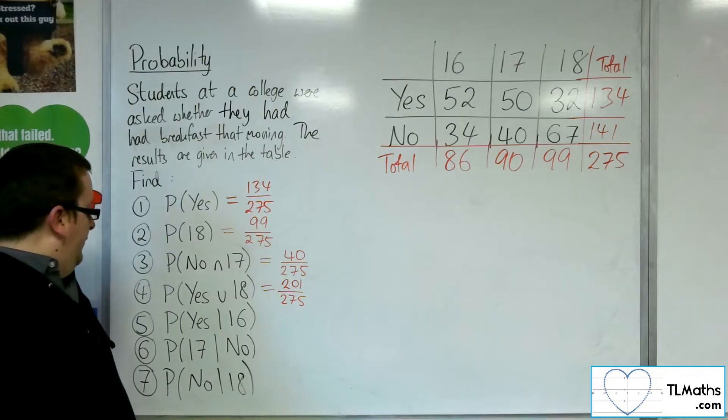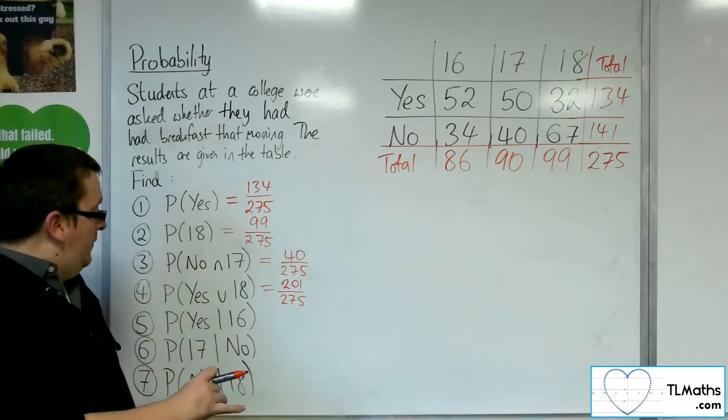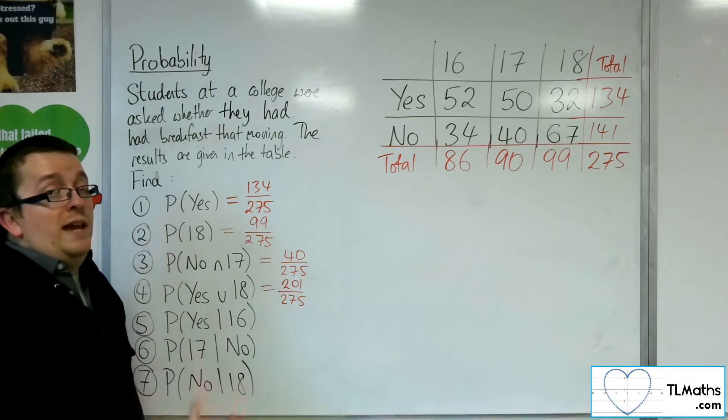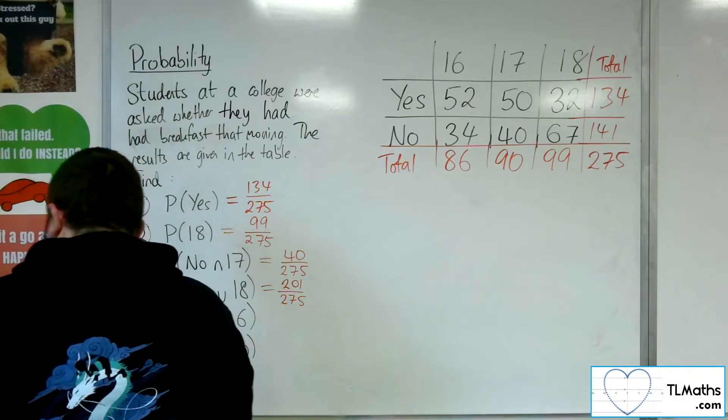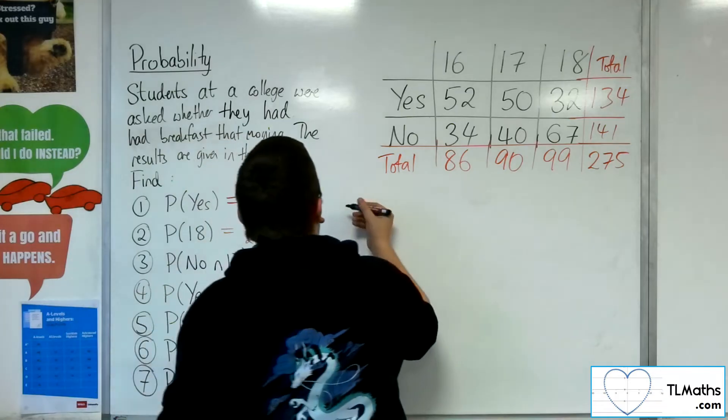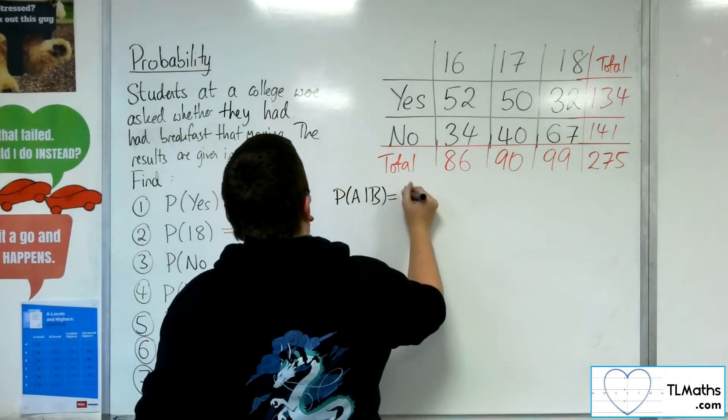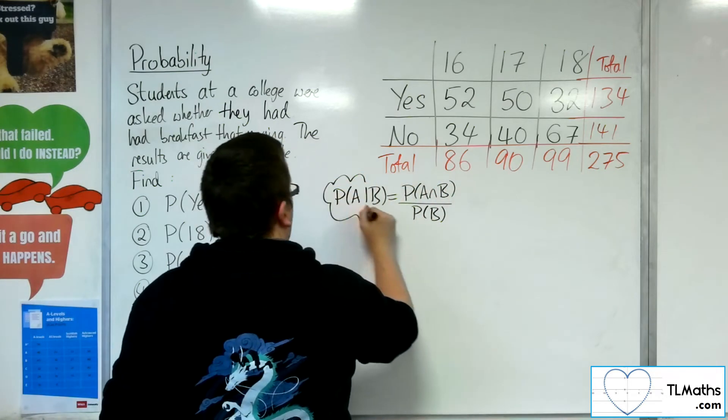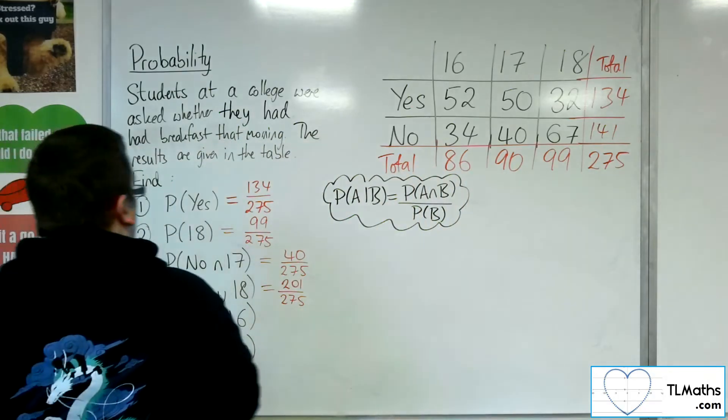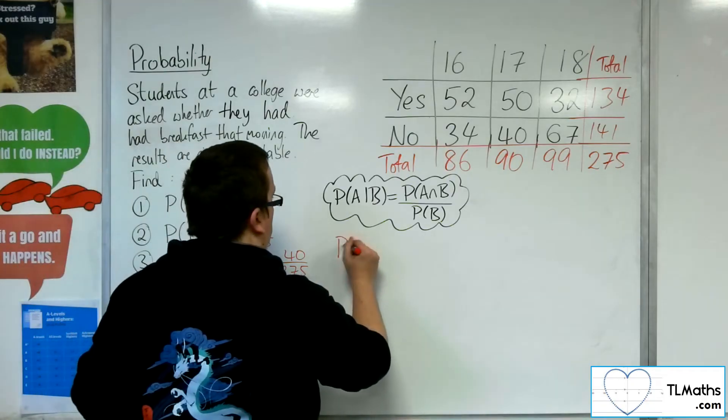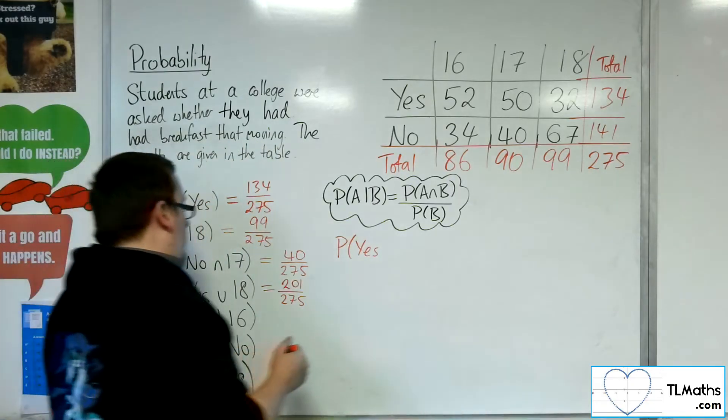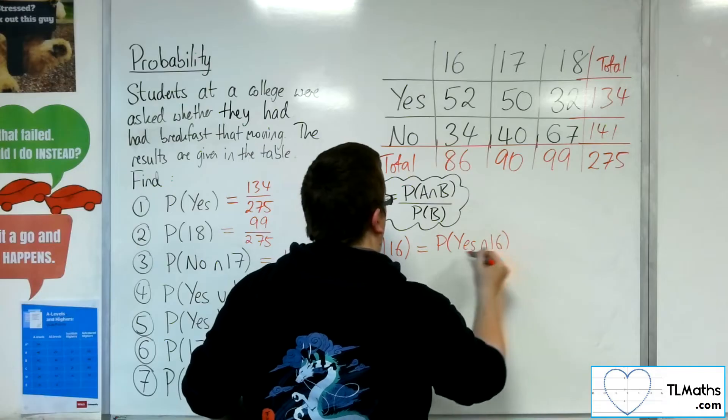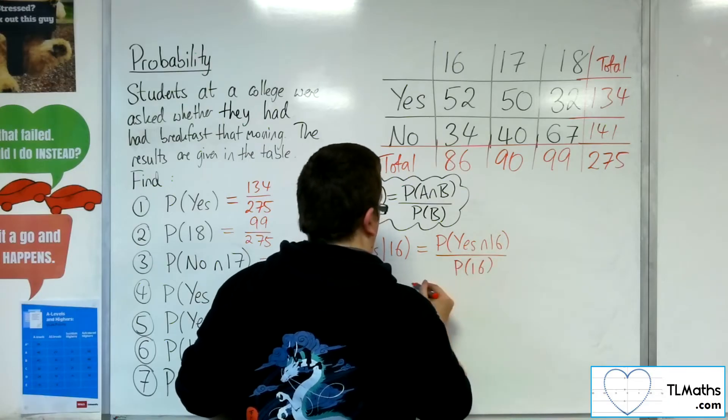Right, now we get to the conditional probabilities. So the probability of saying yes, they did have breakfast given that they were 16 years old. Okay, now you can use the formula to do this. Okay, so the formula, remember, is the probability of A given B is the intersection of A and B divided by the probability of B. So for us, we're looking at the probability of having breakfast given that they were 16, which is the probability of having breakfast and being 16 divided by the probability of being 16.